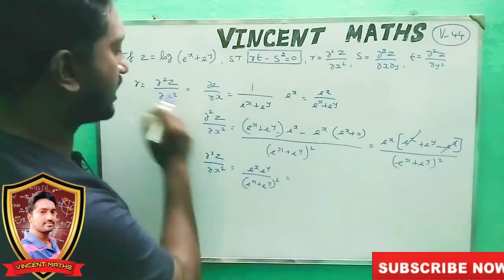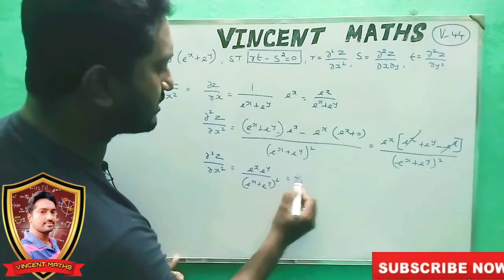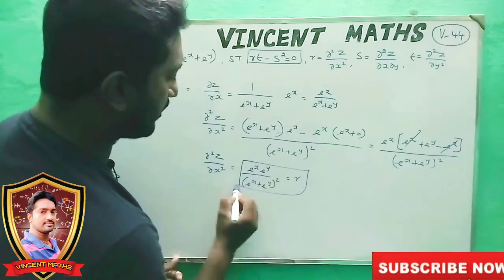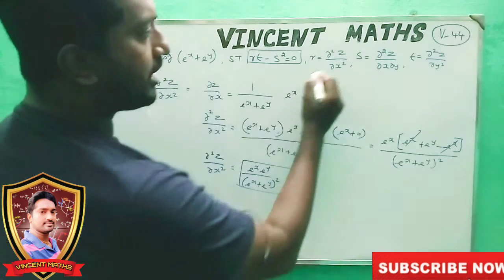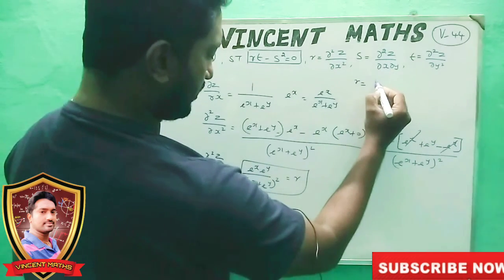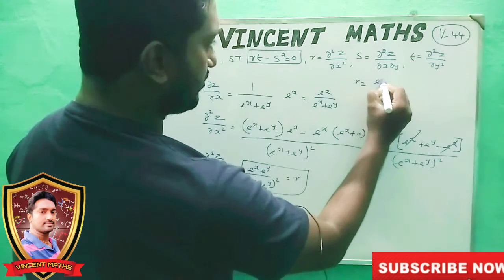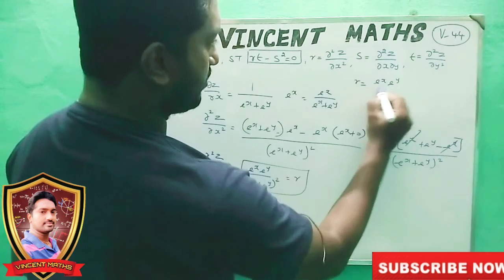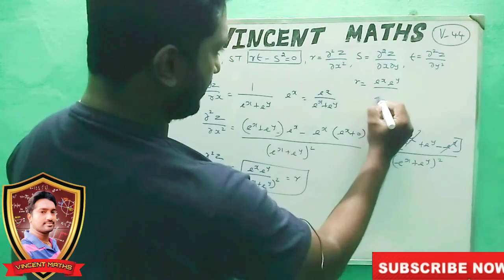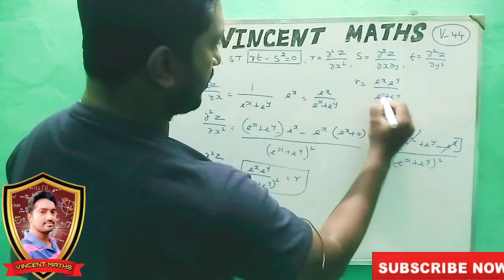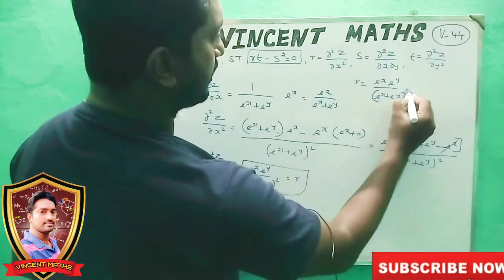So dou squared z by dou x squared — the answer is e power x into e power y divided by e power x plus e power y whole squared. Therefore r equals e power x into e power y divided by e power x plus e power y whole squared.